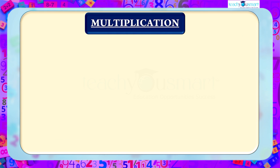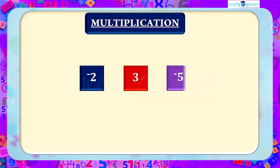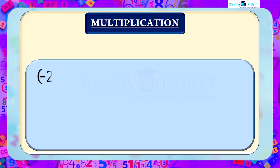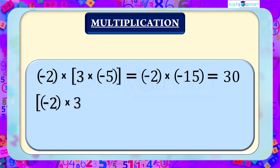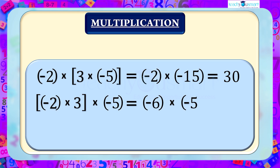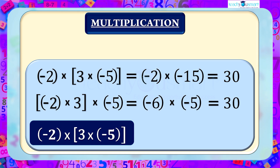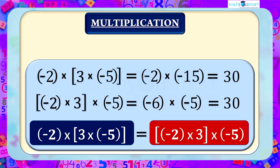Let's examine multiplication of integers next, using the same three integers: minus 2, 3, and minus 5. While multiplying these numbers, we can again group them into either: (minus 2 multiplied by 3) multiplied by minus 5 equals minus 6 multiplied by minus 5 equals 30, or minus 2 multiplied by (3 multiplied by minus 5) equals minus 2 multiplied by minus 15 equals 30. They are equal.